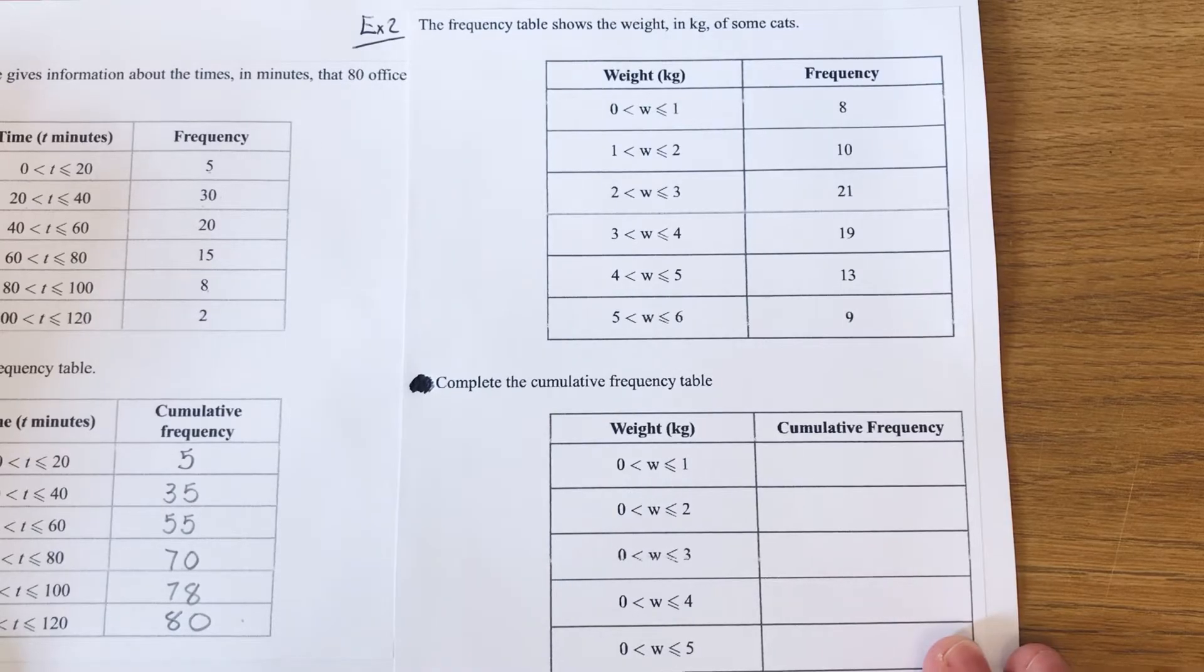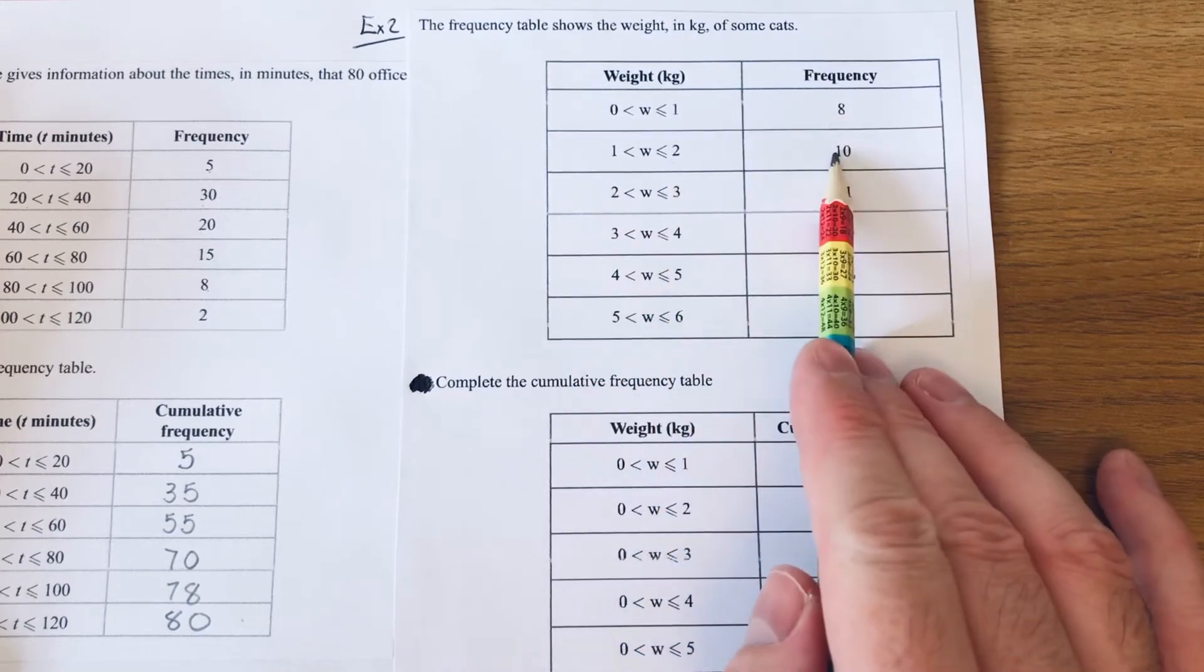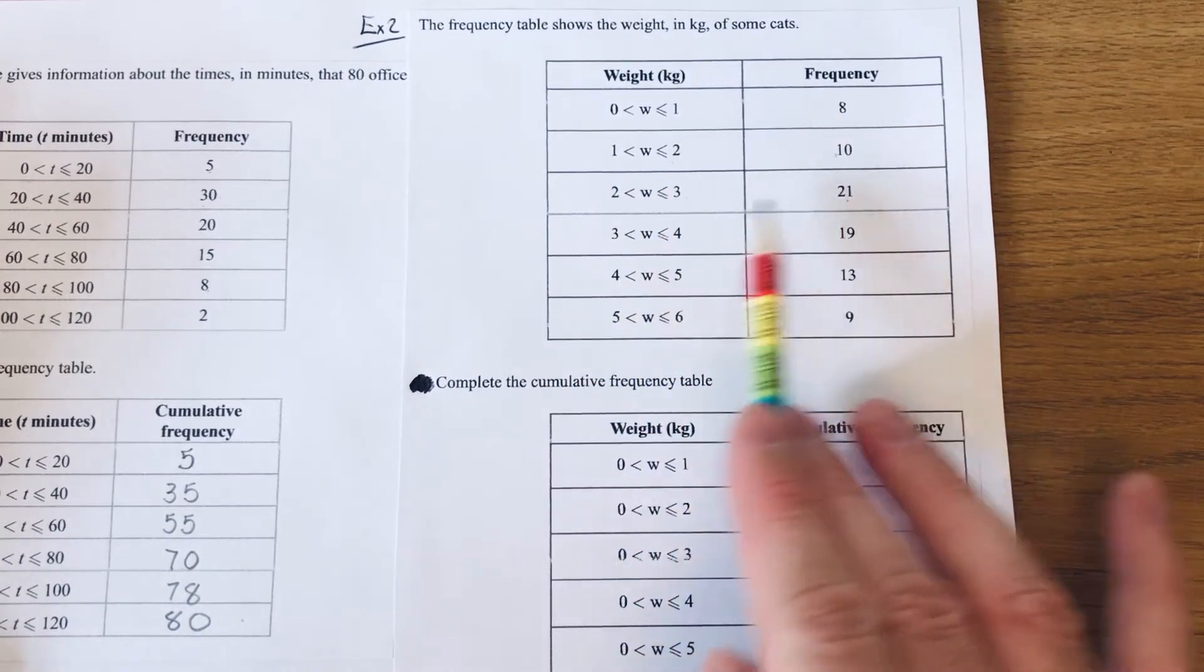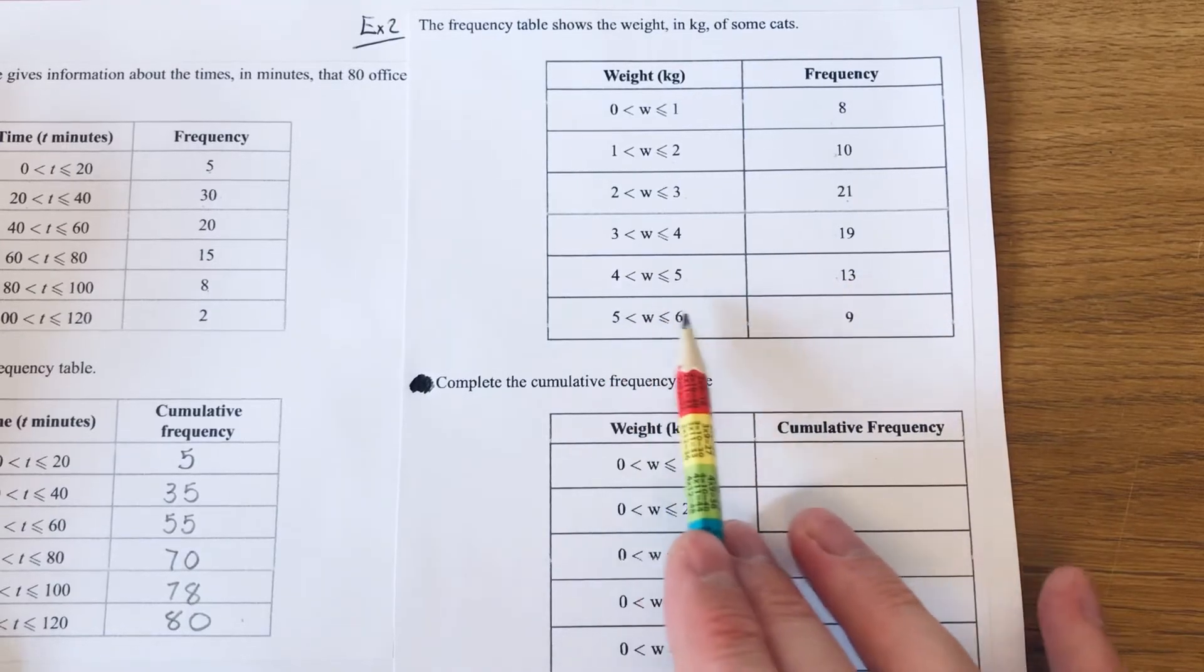So let's move on to the second question. The frequency table shows the weight in kilograms of some cats. So we've got 0 to 1 is 8, 1 to 2 is 10, 2 to 3 is 21, 3 to 4 is 19, 4 to 5 is 13, 5 to 6 is 9.